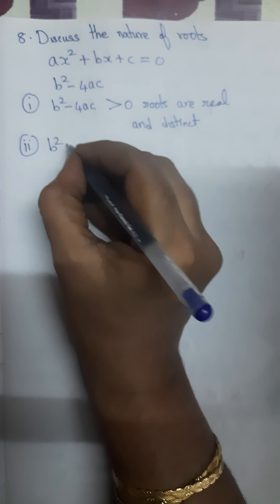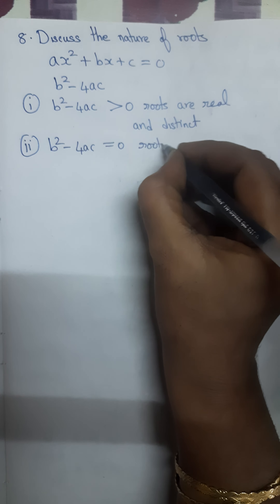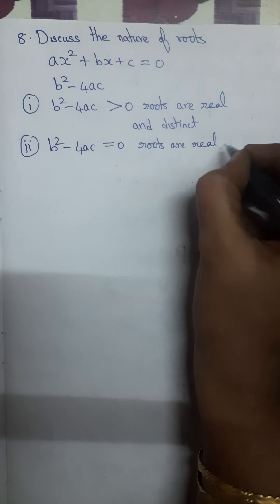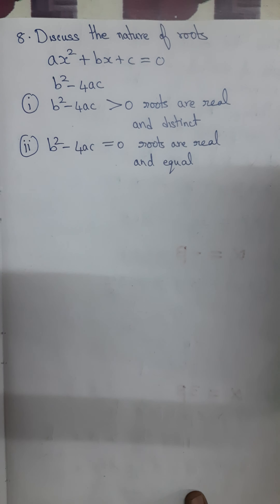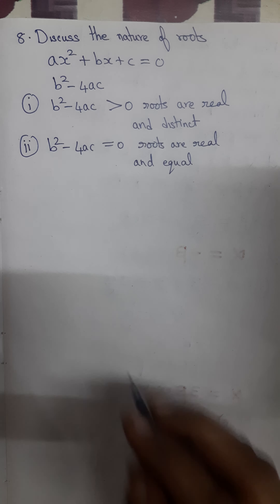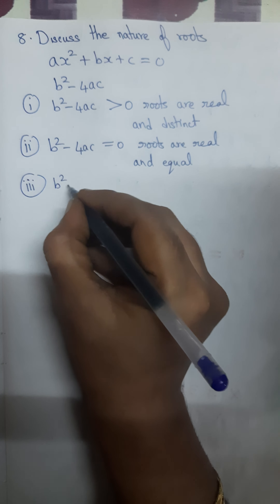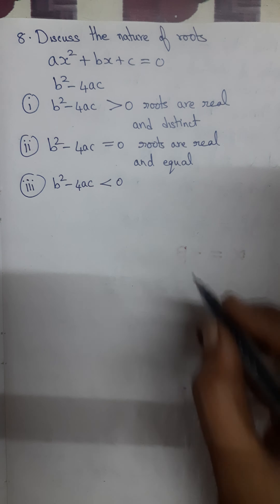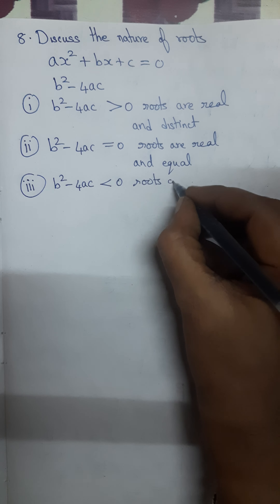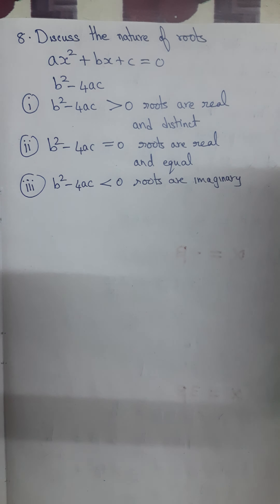The second case is if b² - 4ac is equal to 0, then the roots are real and equal — there will be two roots, but both will be equal numbers. The third case is if b² - 4ac is less than 0, then the roots are imaginary. So the nature of the roots depends on these three cases.